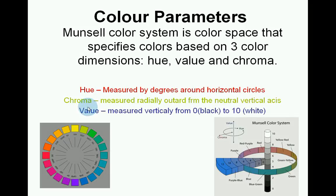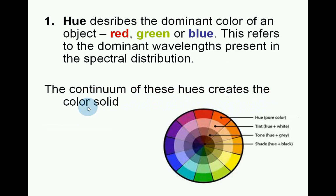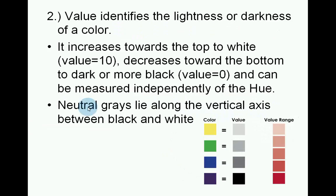Hue is measured by degrees around horizontal circles. Chroma is measured radially outward from the neutral vertical axis. Value is measured vertically from 0 to 10, black to white. Hue describes the dominant colour of an object — red, green or blue — referring to the dominant wavelengths present in the spectral distribution. The continuum of these hues creates the colour solid. Value identifies the lightness or darkness of a colour; it increases towards the top to white (value 10) and decreases towards the bottom to black (value 0), and can be measured independently of hue. Neutral greys lie along the vertical axis between black and white.